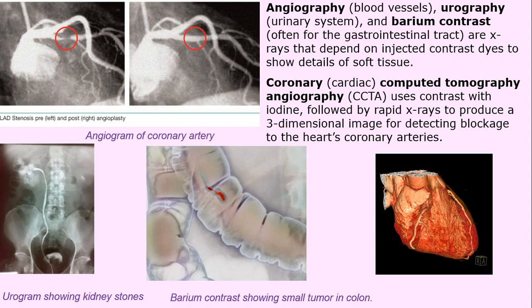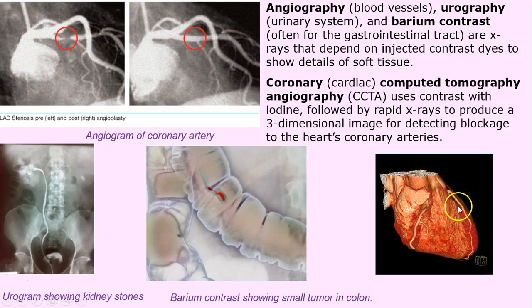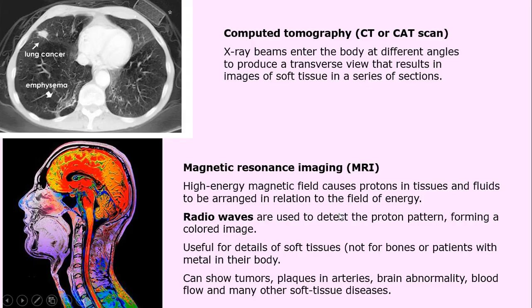Computed tomography angiography — a CCTA scan — uses iodine as contrast and a series of sometimes hundreds of x-rays, resulting in a three-dimensional structure. You can detect blockages; in this case the coronary and the descending artery look pretty nice — a fairly healthy heart here.